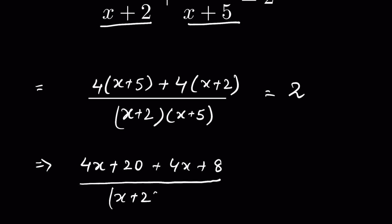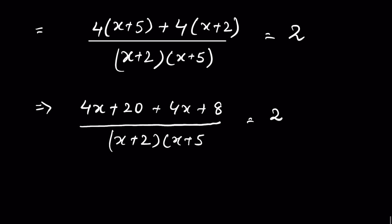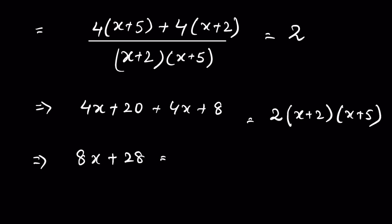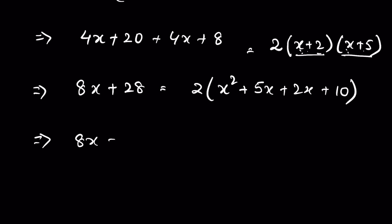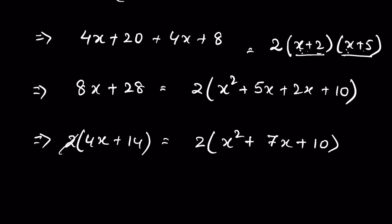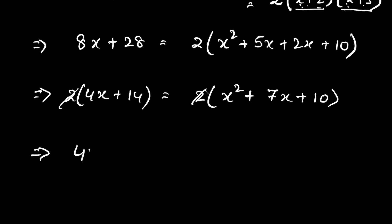So we have (4x+20 + 4x+8) upon (x+2)(x+5) = 2. We can send the denominator across: 4x+20+4x+8 = 2(x+2)(x+5), which gives 8x+28 = 2(x²+7x+10). We can take 2 as a common factor on the left: 2(4x+14) = 2(x²+7x+10), and cancel the 2 from both sides, giving 4x+14 = x²+7x+10.